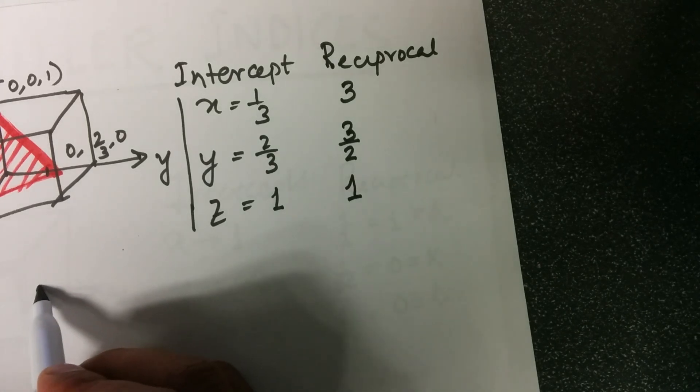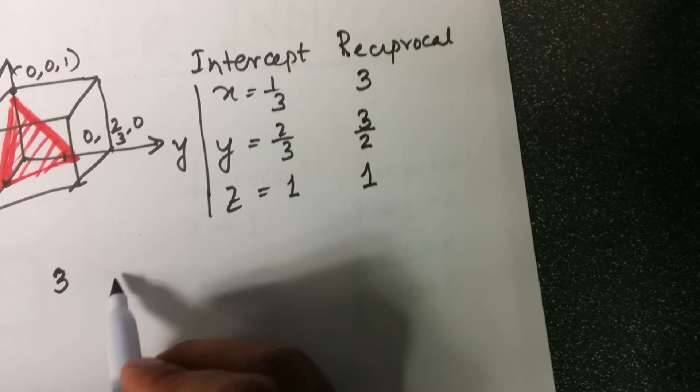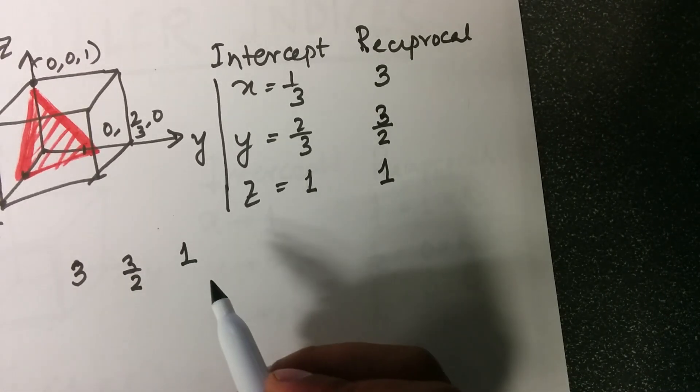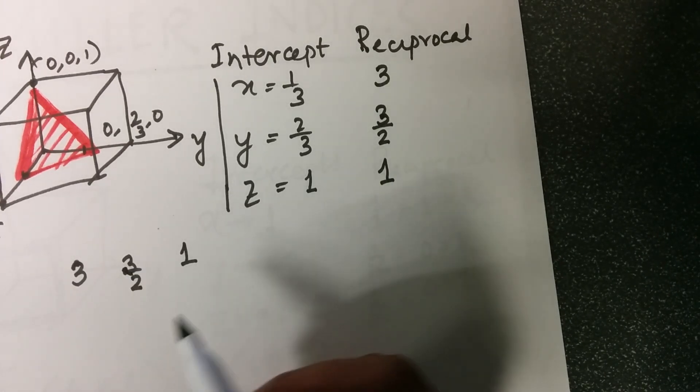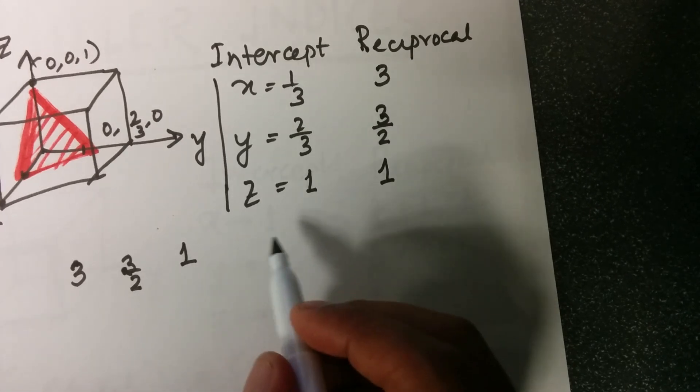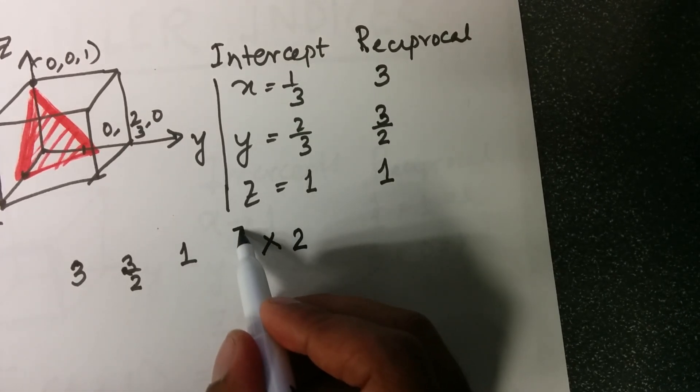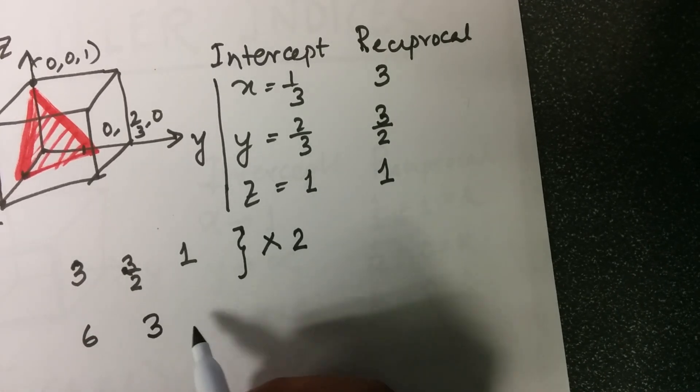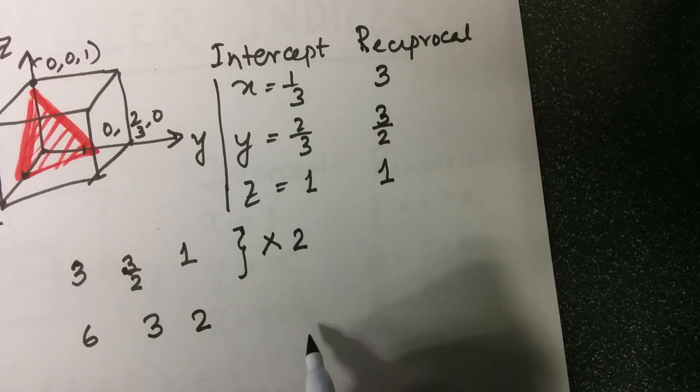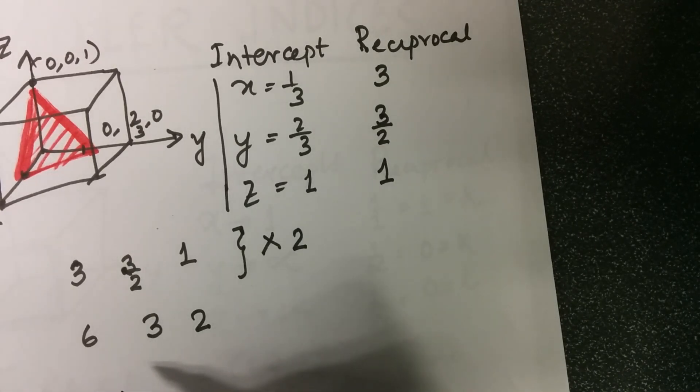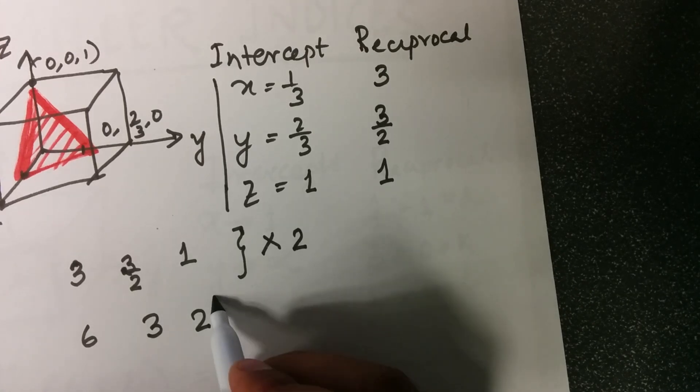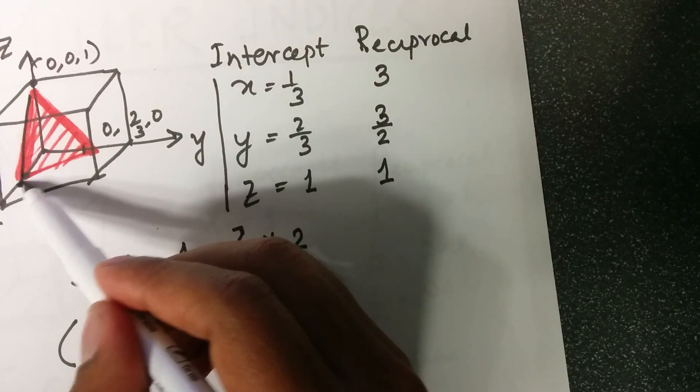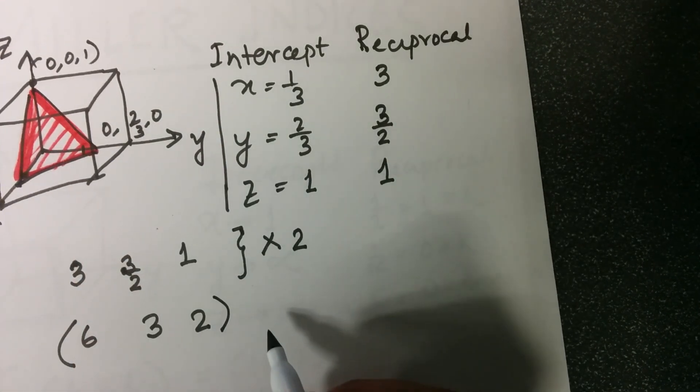If we write these three numbers together as we did, it will become 3, 3/2, and 1. However, Miller indices have to be integers. So we multiply throughout by 2, which is the denominator. And we get 6, 3, and 2 as the three numbers, as the reciprocals of intercepts. We put them inside parenthesis to say this plane is denoted as (6, 3, 2) plane.